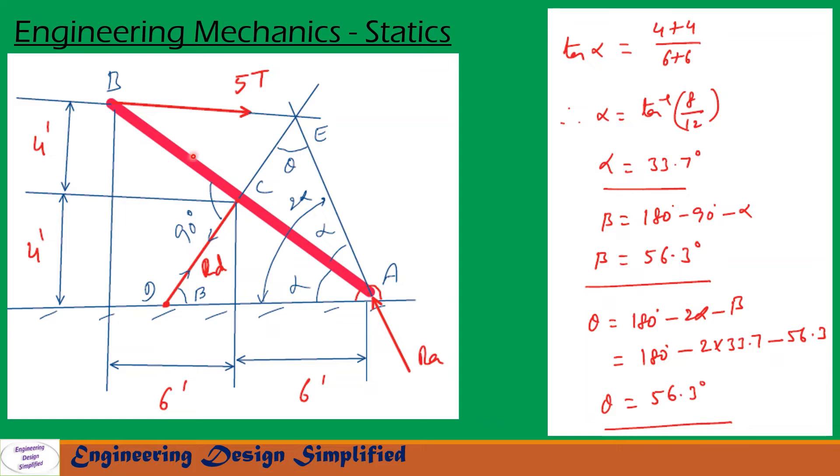From this right angle triangle A, B and at this point, this angle is alpha. This distance is 6 plus 6, 12 feet, and this distance is 4 plus 4, 8 feet. From this we can find tan alpha equal to 4 plus 4 by 6 plus 6. So alpha is 33.7 degrees.